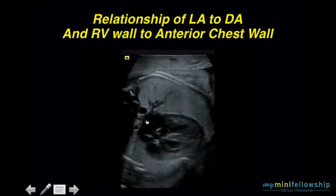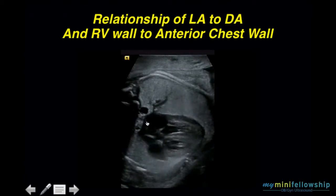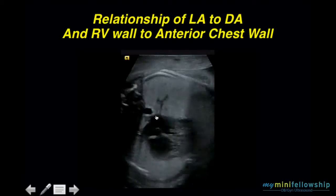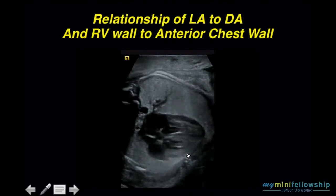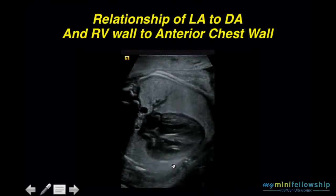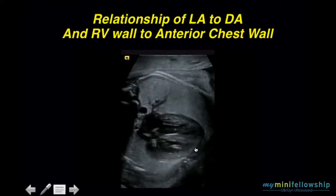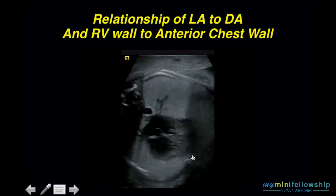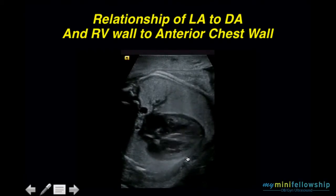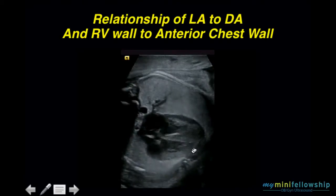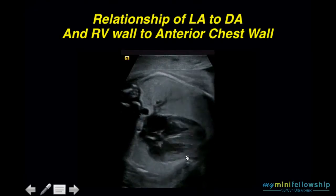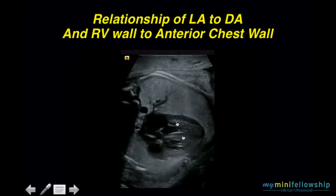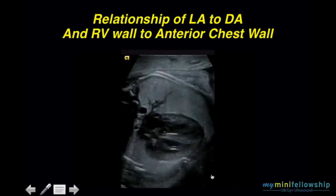If the left atrium is not proximate to the descending thoracic aorta, then something has pushed the heart anteriorly. The right ventricle is more anterior than right, and we expect the right ventricle will touch the anterior chest wall. If it does not, something pushed the heart backward.